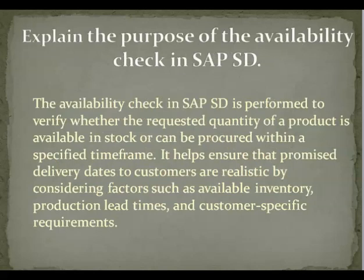Explain the purpose of the availability check in SAP S.D. Answer: The availability check in SAP S.D. is performed to verify whether the requested quantity of a product is available in stock or can be procured within a specified timeframe. It helps ensure that promised delivery dates to customers are realistic by considering factors such as available inventory, production lead times, and customer-specific requirements.